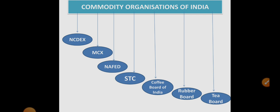Coming to the next one — MCX, Multi Commodity Exchange. It handles a wide range of commodity deals including agriculture, metals, and energy-related products. When it comes to energy, we are talking about exporting energy-producing things like coal, charcoal, solar energy batteries. So MCX is a multi-commodity exchange that looks after energy, metals, as well as agricultural products.